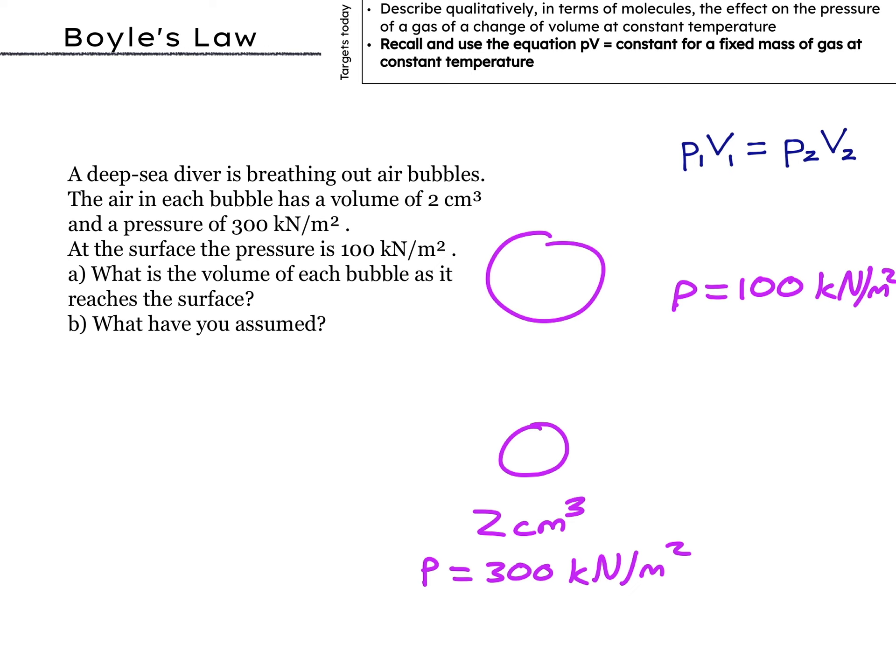So V1 equals 2 centimeters cubed, P1 equals 300 kilonewtons per meter squared, P2 equals 100 kilonewtons per meter squared, and V2 is unknown. All right, so nice to write out the variables at the start. The equation is P1V1 equals P2V2.